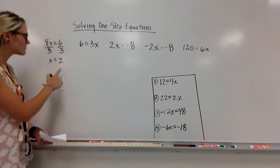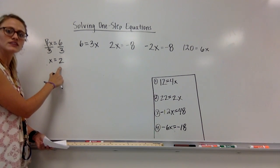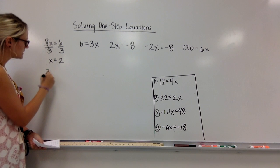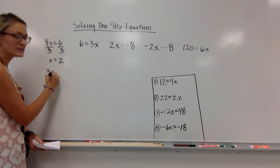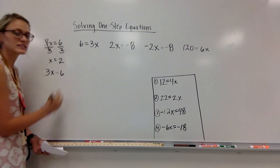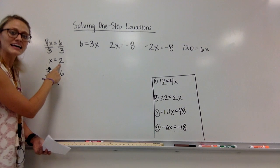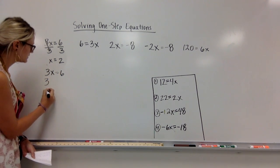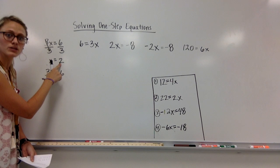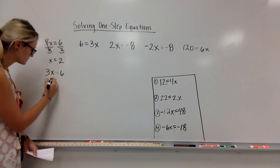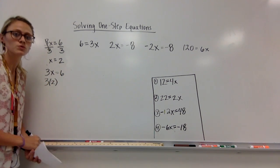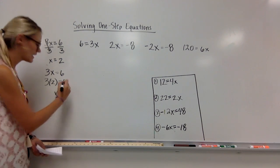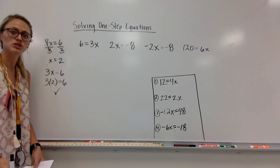If you want to check that answer, all you've got to do is take your answer and plug it back into x. So originally I had 3 times x equals 6. I've got x is 2, so let's go see. Instead of an x, I'm going to put a 2. 3 times 2 equals 6. My answer is right.